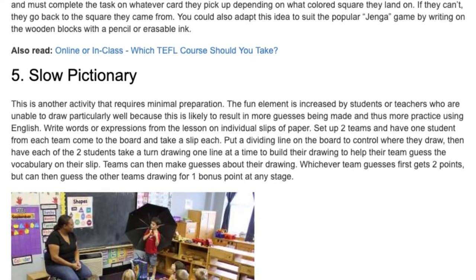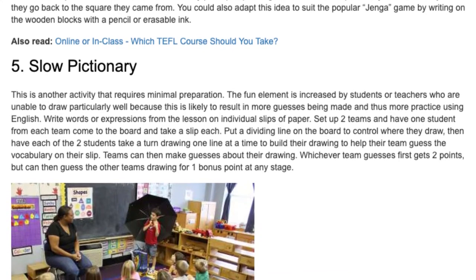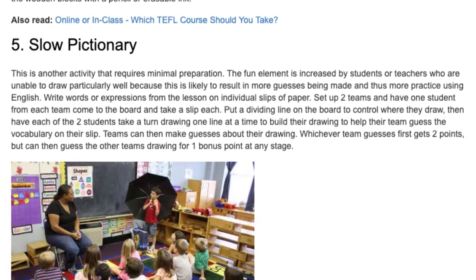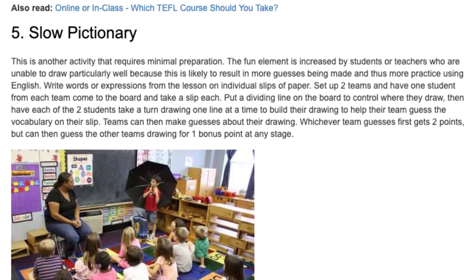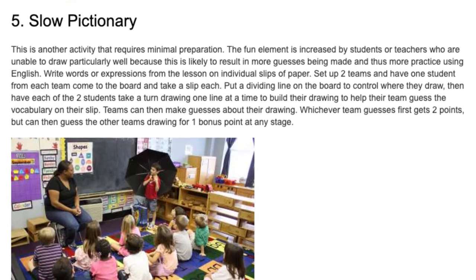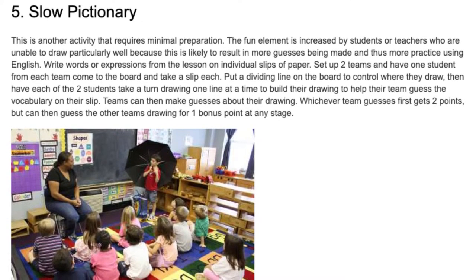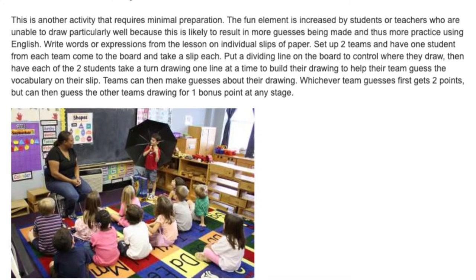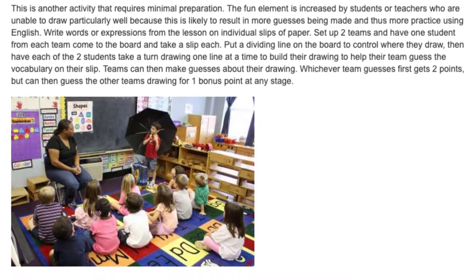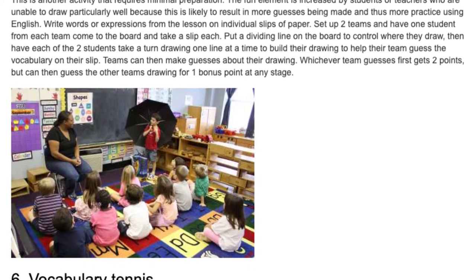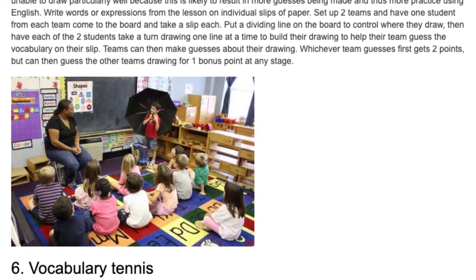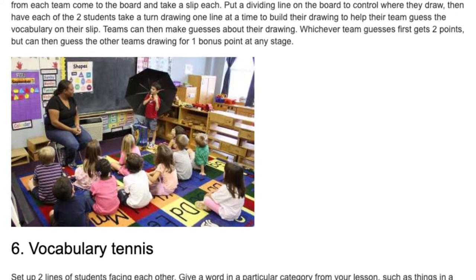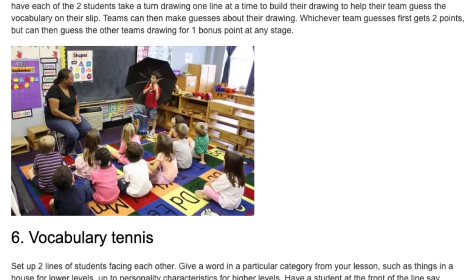Slow Pictionary. This is another activity that requires minimal preparation. The fun element is increased by students or teachers who are unable to draw particularly well, because this is likely to result in more guesses being made and thus more practice using English. Write words or expressions from the lesson on individual slips of paper. Set up two teams and have one student from each team come to the board and take a slip each. Put a dividing line on the board to control where they draw, then have each student take a turn drawing one line at a time to build their drawing to help their team guess the vocabulary on their slip. Teams make guesses about the drawing, and whichever team guesses first gets two points but can also guess the other team's drawing for one bonus point at any stage.